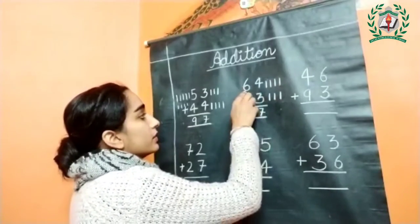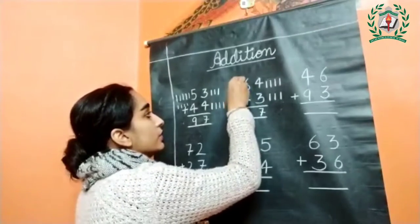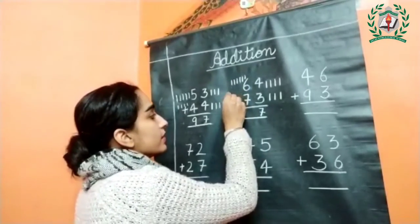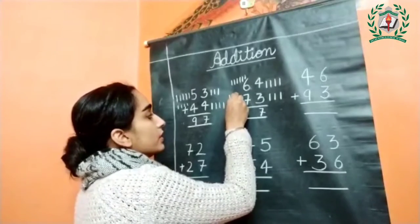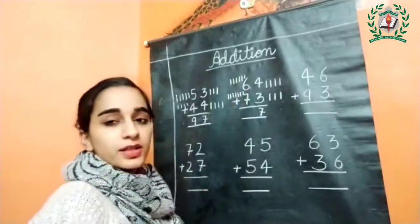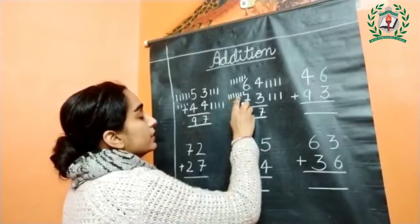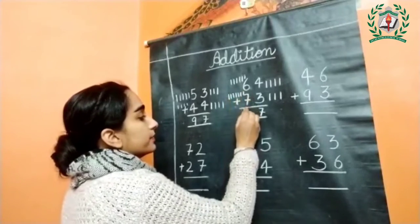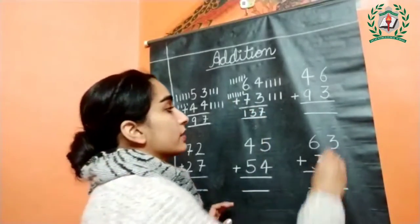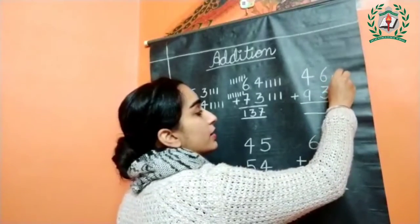Next, this is number six — draw six lines: one, two, three, four, five, and six. This is seven — draw seven lines: one, two, three, four, five, six, and seven. Now calculate them together: one, two, three, four, five, six, seven, eight, nine, ten, eleven, twelve — and thirteen. Total is 137.